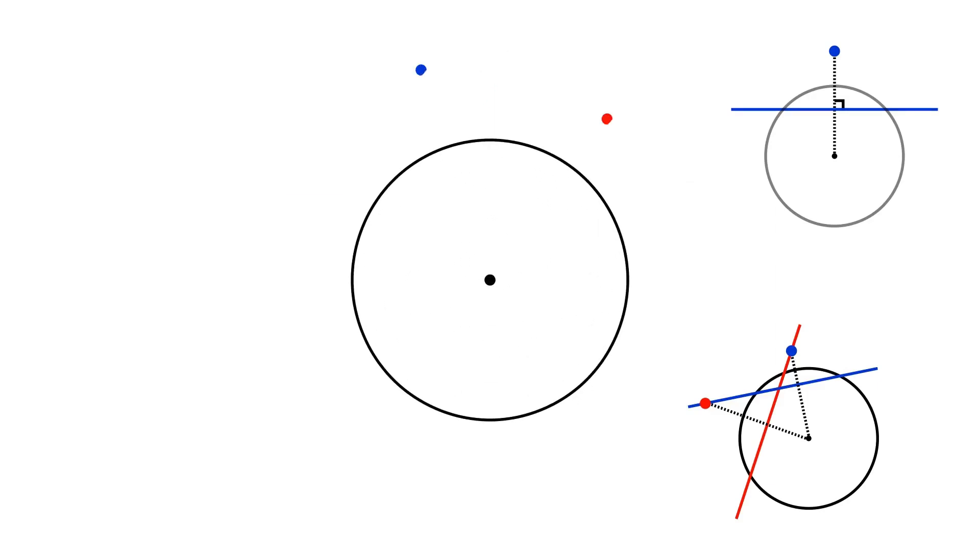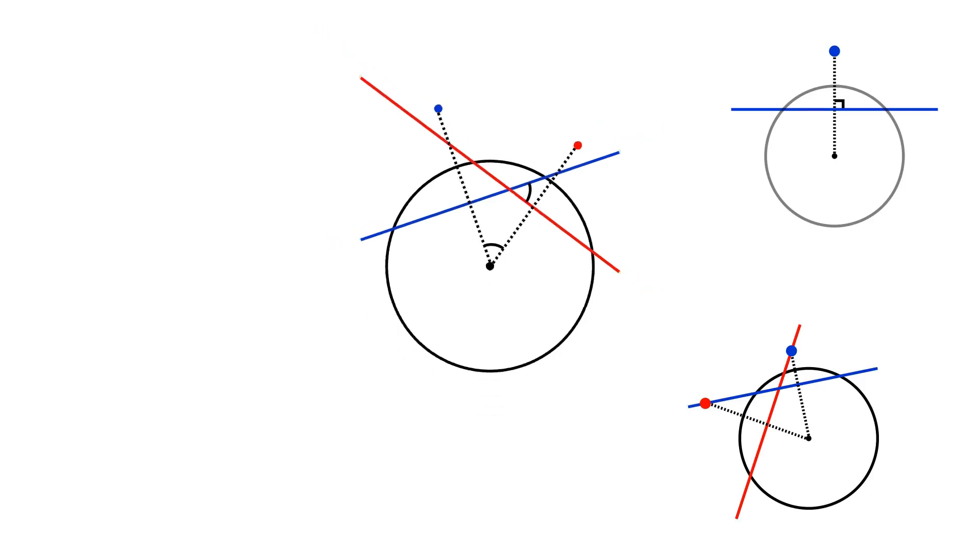Finally, the angle between the red and the blue line is obviously equal to the angle formed by the blue point, center, and the red point. This follows easily from the previous property. Note a particular case of this: if the red and the blue points lie on one line with a circle center, then the red and the blue lines are parallel.